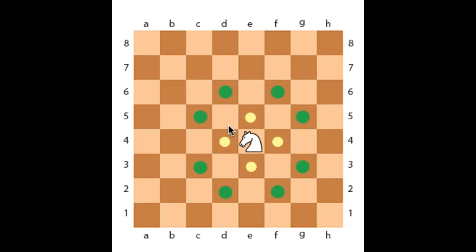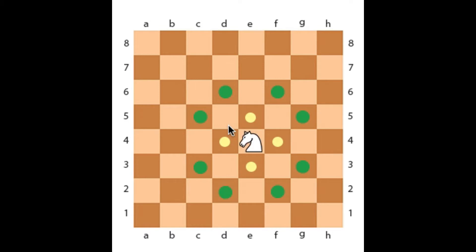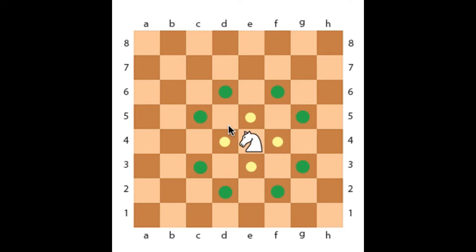The knight is the only piece on the board that can jump over other pieces. The knight's movement can also be viewed as an L shape, laid out at any horizontal or vertical angle.